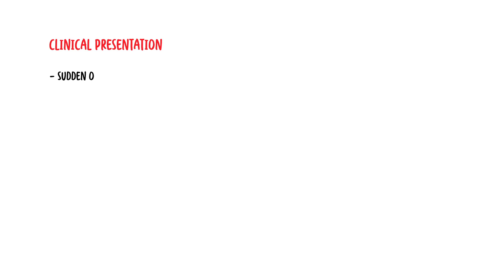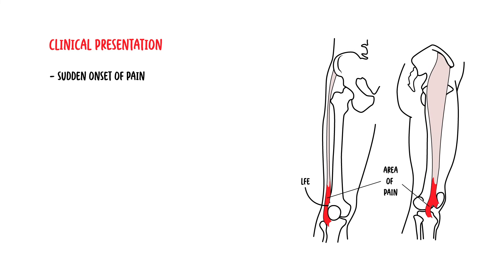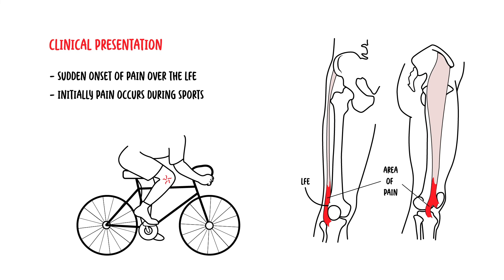Clinical presentation of iliotibial band syndrome is sudden onset of pain, localized where the iliotibial band courses over the lateral femoral epicondyle. Initially, the pain occurs during sports, described as sharp or burning, when the knee is slightly bent or when the knee extends during cycling or during foot strike when running. Pain may become constant and deep.